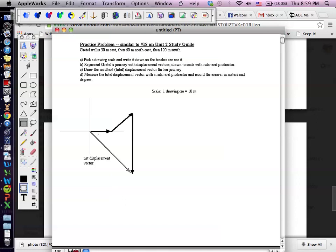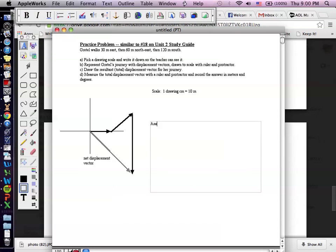Now I happen to have computed this ahead of time. So I'm going to tell you what the answer is, even though mine might not be to scale. The actual answer is net displacement equals 106 meters and 47 degrees below east.